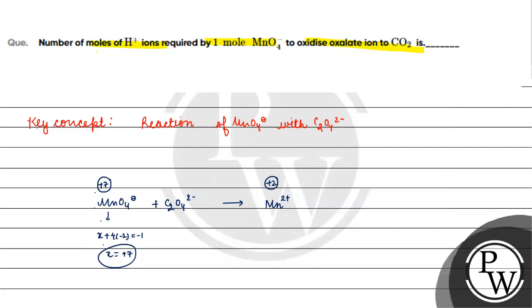Permanganate undergoes reduction, while oxalate ion undergoes oxidation to CO2. For the oxalate ion C2O4²⁻, we calculate carbon's oxidation state: 2x + 4×(−2) = −2, so 2x = +6.